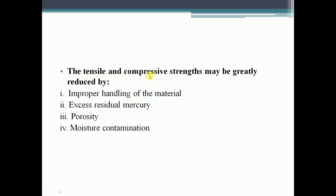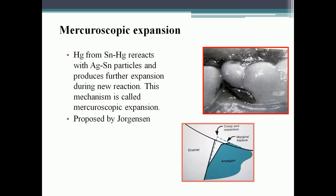Tensile and compressive strength may be greatly reduced by improper handling, excess residual mercury, porosity, and moisture contamination. Mercuroscopic expansion: mercury from the silver-mercury phase re-reacts with silver and tin particles producing further expansion — this mechanism, proposed by Jobrinson, is called mercuroscopic expansion.